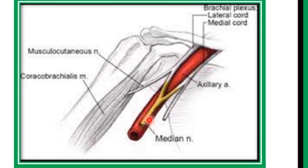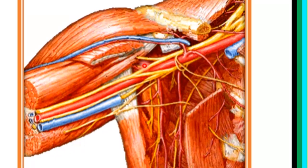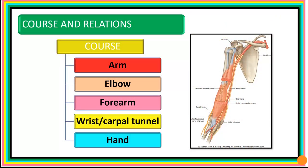The medial root will cross in front of the third part of the axillary artery. Here is the axillary artery, the lateral root, and the medial root. The medial root crosses the top part of the axillary artery to form the median nerve at the lateral part of the axillary artery. We will next look at the course and relations of the median nerve at the arm, elbow, forearm, wrist, carpal tunnel, and then finally the hand.